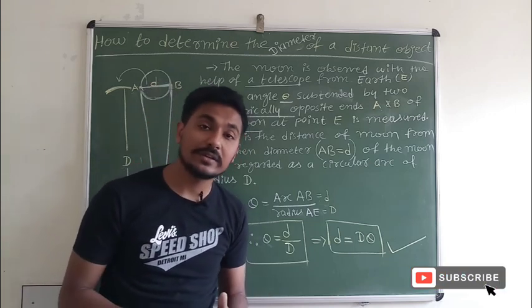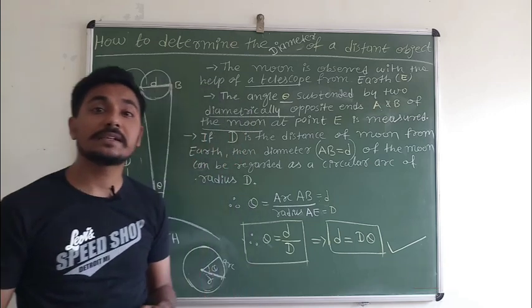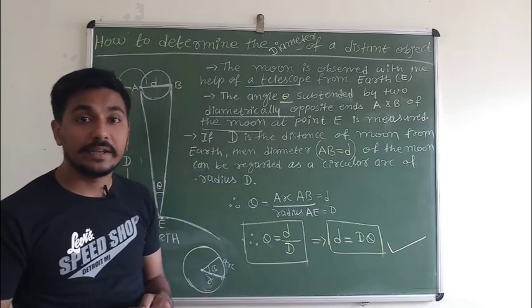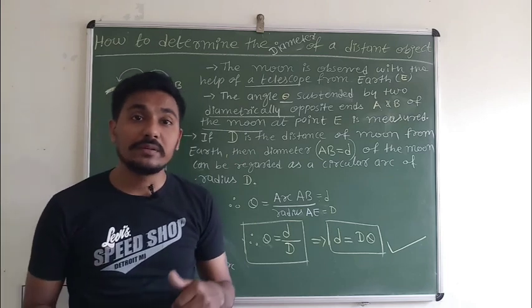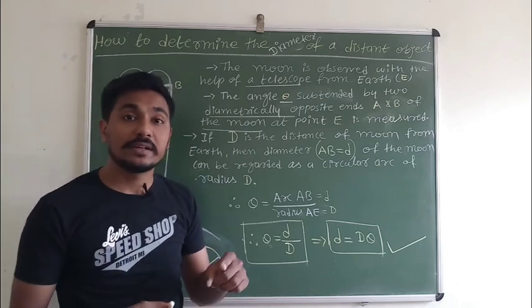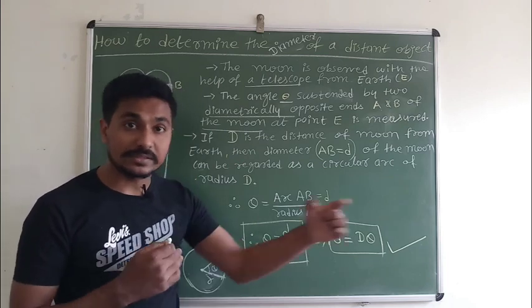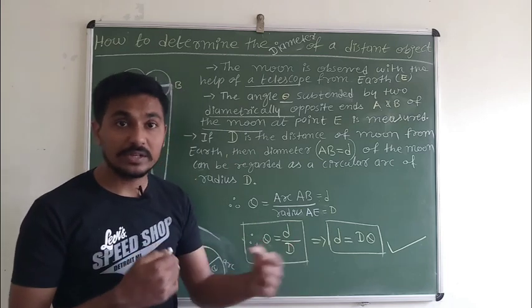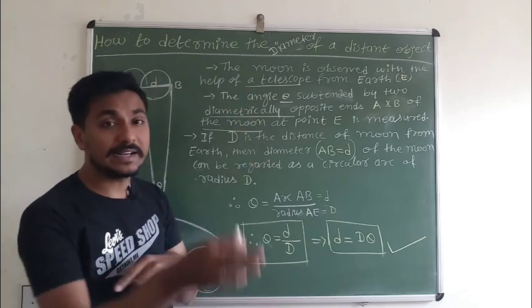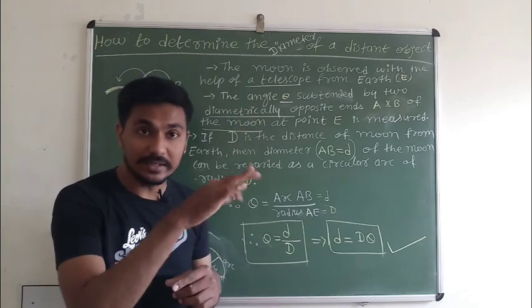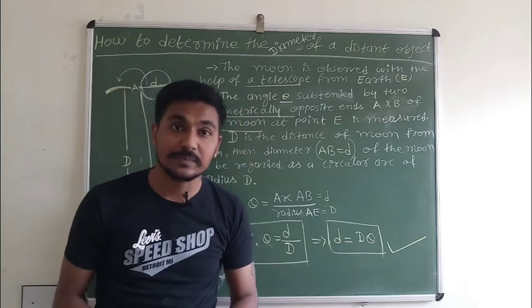In the last lecture, we have seen the parallax method. In the parallax method, we measured the distance, but in this case, we are measuring their diameter, their size.